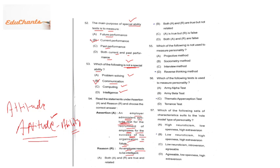For Question 54, both the assertion and reason seem correct, but the answer is B. While it is true an employer selects good employees, the reason says the employee needs to be intelligent — that is only part of the picture. Intelligence is not the necessary and sufficient condition to be selected in the recruitment process. So both are correct but they are not related to each other.